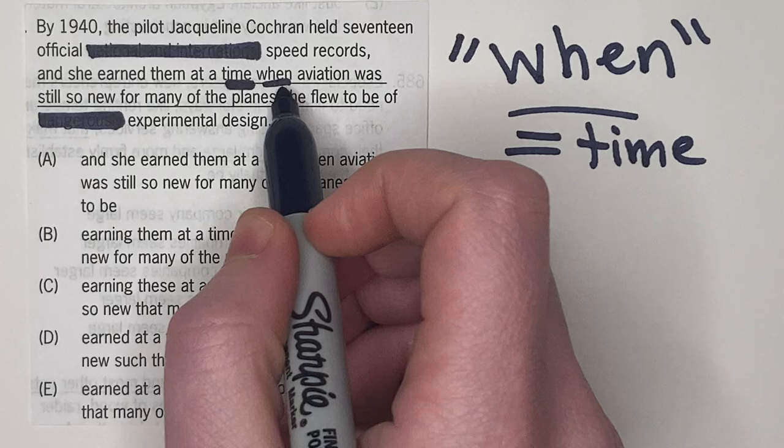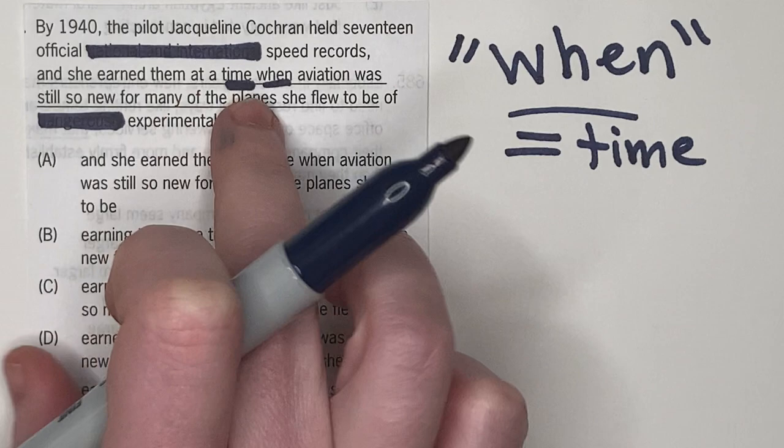So what I wanted to focus on was the word when here. So a time when, well, because when literally can only refer to time on the GMAT, this is actually correct.